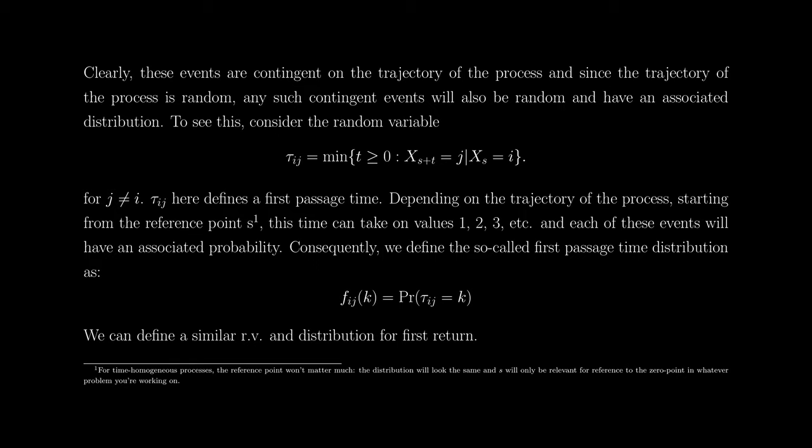Depending on the trajectory of the process, starting from reference point s, this time can take on values one, two, three, and so on, and each of these events will have an associated probability. We define the first-passage probabilities as f_ij(k), which is simply the probability that tau_ij assumes the value k for some integer k.